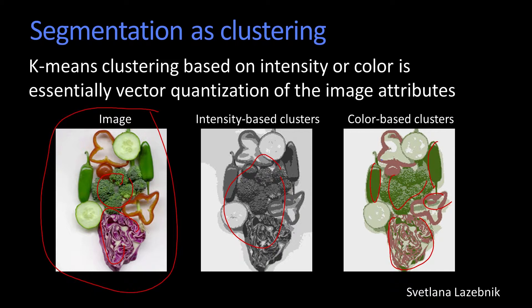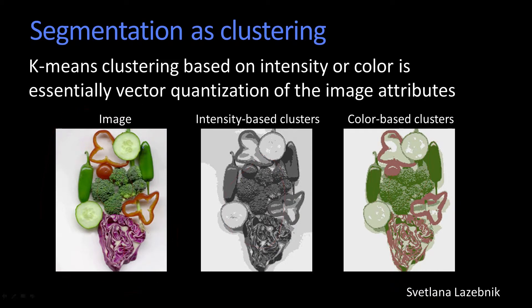Notice, however, this pepper here and this pepper there — this system does not know at all that those two peppers are distinct, because the only thing it uses to create these clusters is the distance in color space.